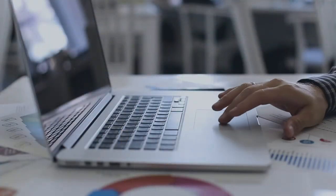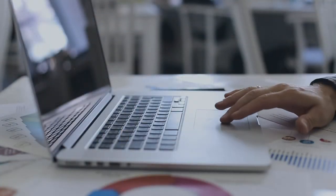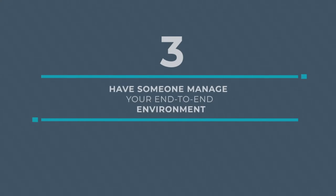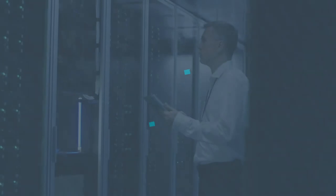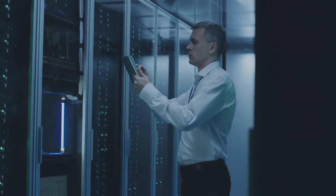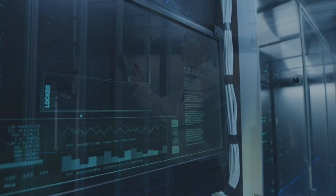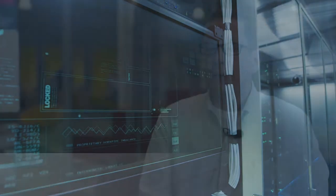This doesn't change the level of complexity you have, but it does change the impact that complexity has on your business. The last thing is making sure that you have someone to manage your end-to-end environment — a champion who's responsible for managing your end-to-end environment, someone who can see all levels of the technology you're using. By doing that, you'll be able to manage your complexity and negate the risk that comes with it.